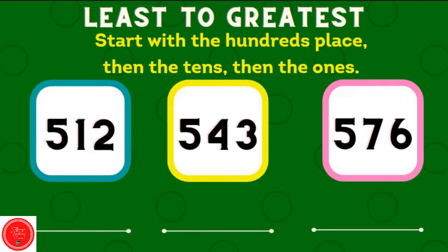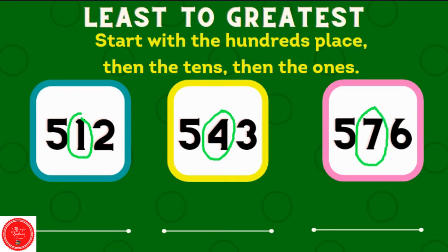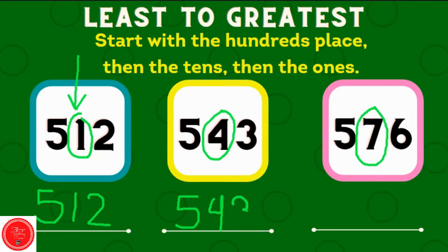Now we have numbers that all have a five in the hundreds place. So what should we do next? We're going to go to the tens place. This number has the smallest number in the tens place. So 512 goes first. Then 543. And then 576.